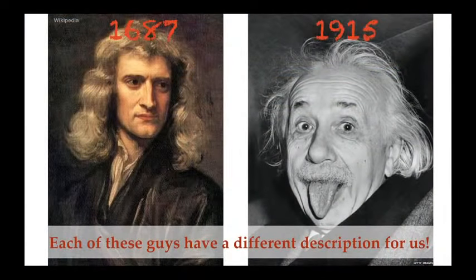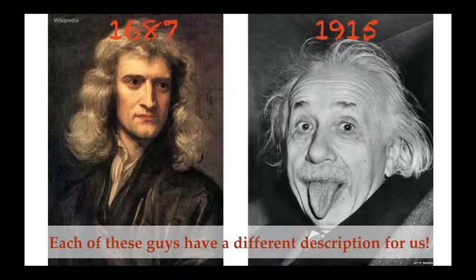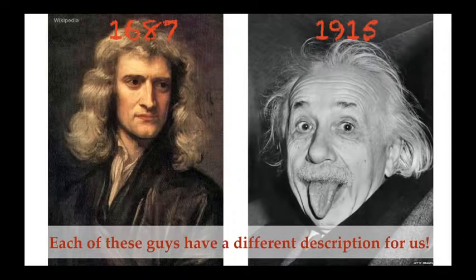Newton gave us his theory of gravity a really, really long time ago. We got this in a book called Principia, which was published in 1687 — that's over 330 years ago. Einstein's theory came a little bit later in 1915, just over 100 years ago. This is not actually a real battle because these guys lived at such different times — they didn't actually live at the same time. So it is a battle of the brains, or a battle of the theories. We're going to start with Newton's theory because he was first.